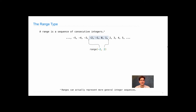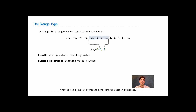It actually makes a lot of things simpler to do it exactly that way. You can compute the length of a range just by subtracting the starting value from the ending value — so 2 minus negative 2 is 4, and there are 4 elements here, as you can see. Element selection is also easy: you just take the starting value and add the index. Indexes start at 0, so the element at index 0 is negative 2, and the element at index 3 is negative 2 plus 3, which is 1.